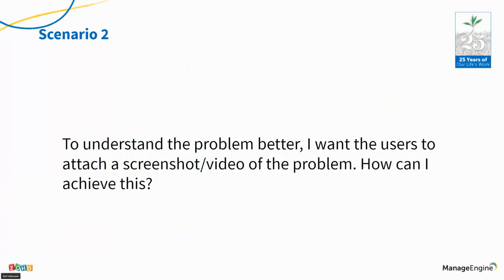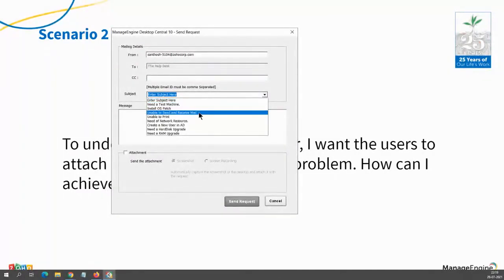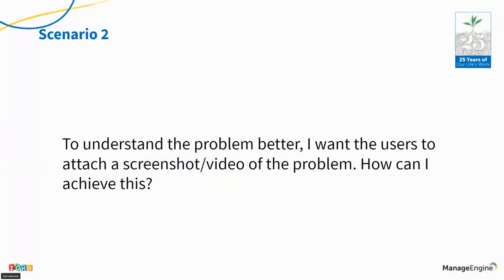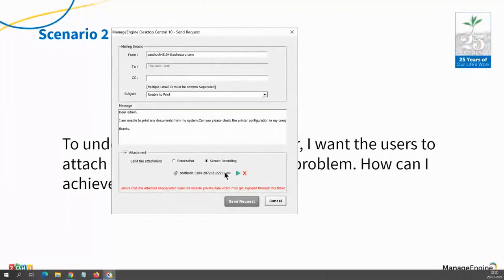Another scenario: a screenshot or video of the problem — how do I achieve it? Whenever a user wants to record a problem and send it to you, they can do it from the Desktop Central agent. I can send a help desk request from the agent and launch a portal. If I have a problem with my printer that I can't explain, I click on 'Attachment' and select 'Screen Recording.' I click Start, it counts down 3, 2, 1 and records the screen. Once I click stop, a small video file is created. If I click 'Send Request,' it attaches this video along with the ticket and it will be seen on Service Desk Plus. This way the user can explain the problem better with a screen recording or screenshot.